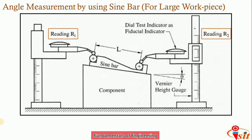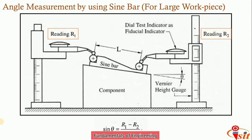The difference between the two height gauge readings R1 and R2, divided by the center distance L of the sine bar, gives sin(θ) of the component angle. For greater accuracy, the position of the dial test gauge probe can be sensed by adjusting a pile of slip gauges until the dial indicator shows the same reading over both the roller and the slip gauges. This method allows accurate angle measurement for larger workpieces.